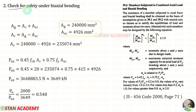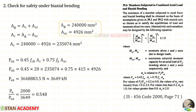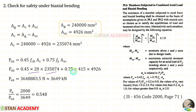Now we are going to check for safety under biaxial bending. The gross area equals area of concrete plus area of steel, so area of concrete AC = AG − ASC. Let us open IS 456 code book page 71, where we can write the equation for PUZ. Applying all values, we get PUZ; dividing by 1000 to convert to kN gives approximately 3649 kN. Therefore PU / PUZ = 2000 / 3649 = 0.548.